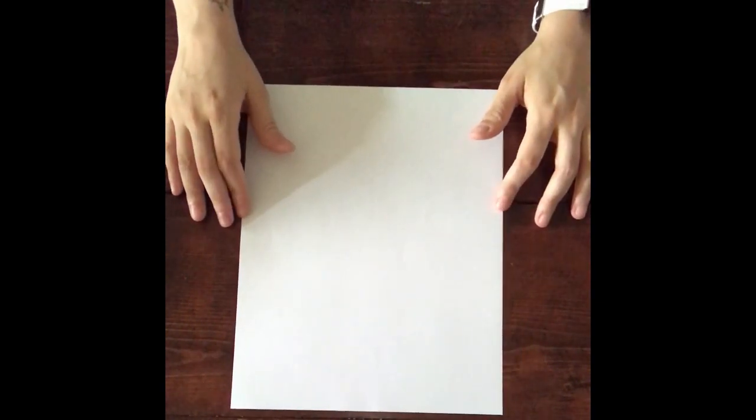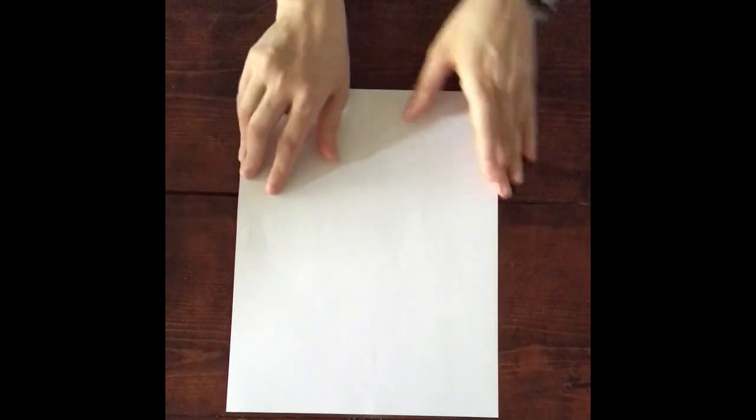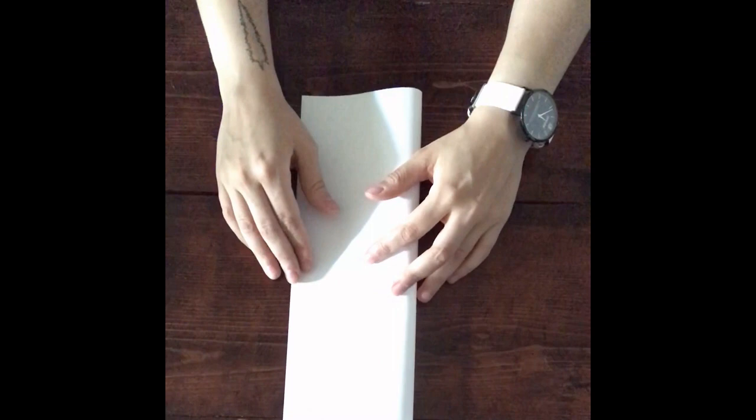Next we're going to try a modified version of the simple plane we just made. The second version will have more weight in the front, changing how the four forces we discussed previously act upon the plane. This plane starts off the same way as the previous plane. I'm using 8.5 by 11 printer paper. The first step is to fold the plane in half and then unfold it.